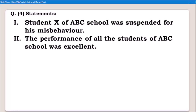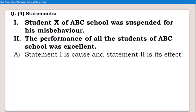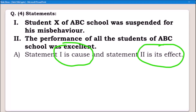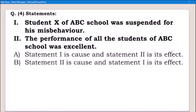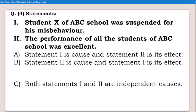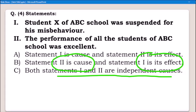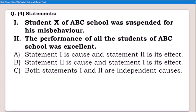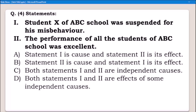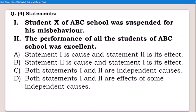There is a clue that these two statements might be the effects of some cause. Options: Alpha — statement one is cause and statement two is its effect. Beta — statement two is cause and statement one is its effect. Charlie — both statements one and two are independent causes. Delta — both statements one and two are effects of some independent causes. Let's read the statements one by one after putting the conjunctions.